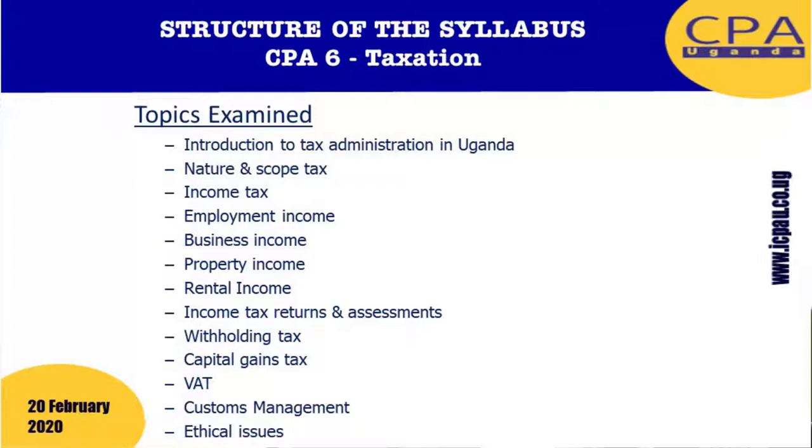The next part of your syllabus is income tax, a very rich area. Tax is imposed in section 4 of the act — income tax is charged on income earned from employment, from business, and from property. Students mistake PAYE as a form of tax. No — pay as you earn is a method of collecting income tax from employment. There are basically three categories: business, employment, and property.